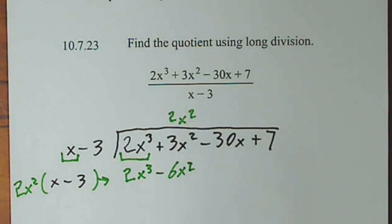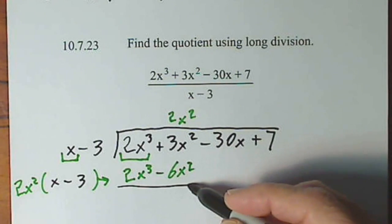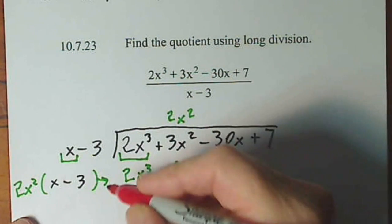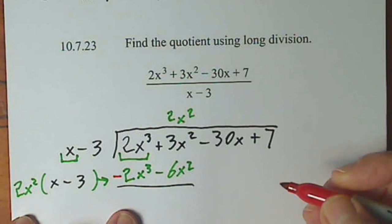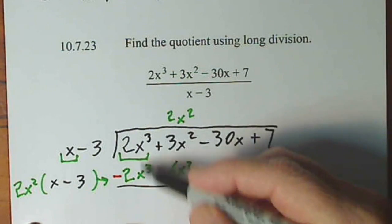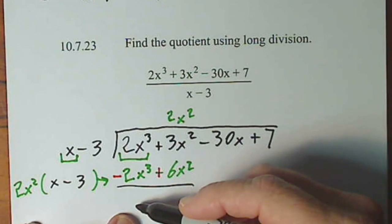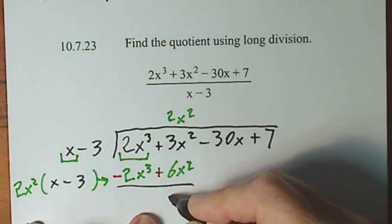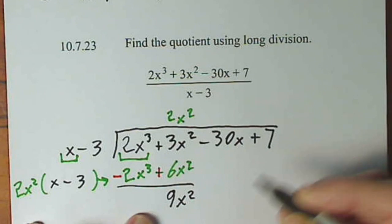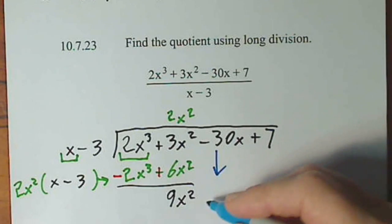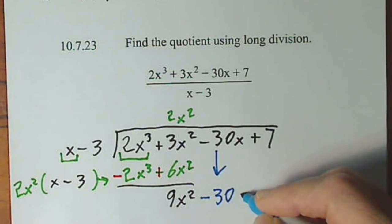Now we're going to subtract this just like the long division you're accustomed to, but you do this probably so subconsciously you don't think about it. Not only do you change the sign of that, but now you have two terms, so you have to change the sign of each term. When we do that, of course the first term, this becomes zero, which is always my goal, so I don't have to write it. If I have positive 3x squared, positive 6x squared, when I combine those, I get 9x squared, and then just like the long division you're accustomed to, you bring down the next term. So I have minus 30x.